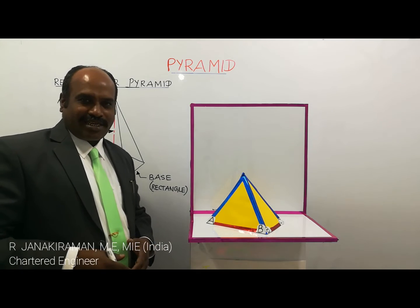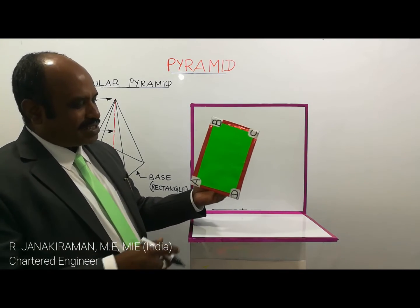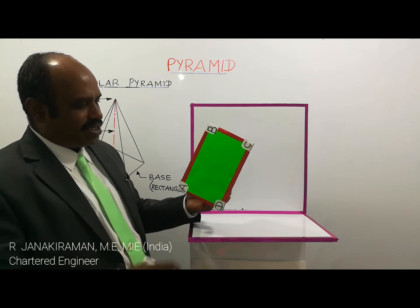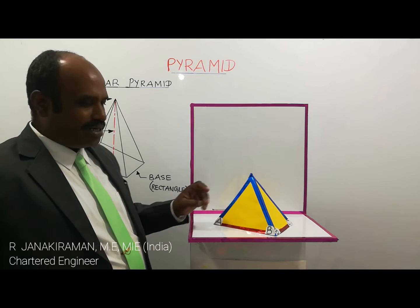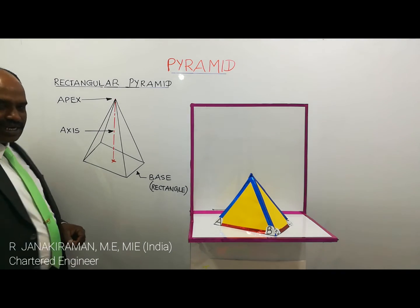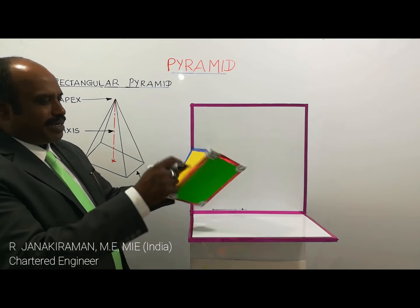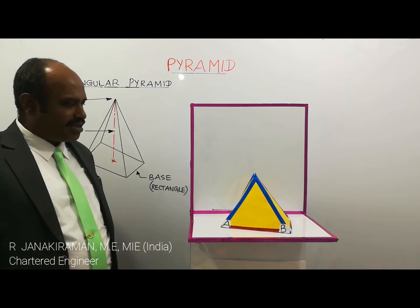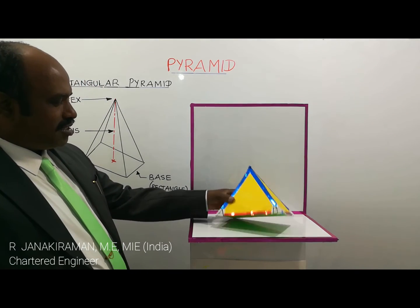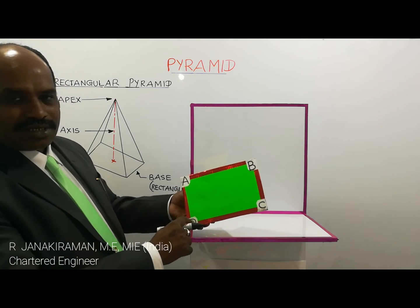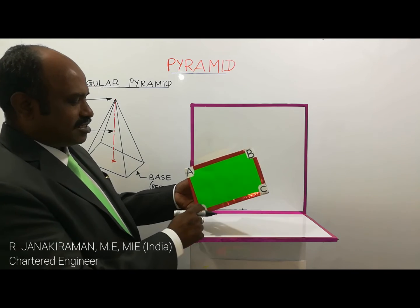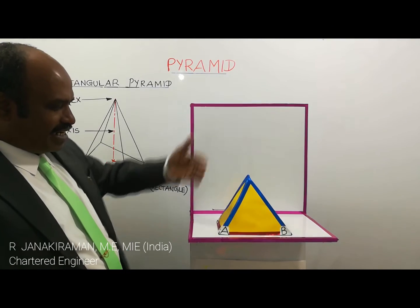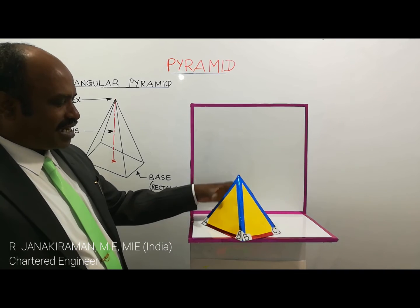The next classification among pyramids is a rectangular pyramid. The green-colored base is of rectangular shape, so it is classified as a rectangular pyramid. The axis is an imaginary line joining the center of the rectangle and the apex. The top corner is called the apex of the pyramid. The rectangle has length and breadth. It has four base corners, and the blue-colored slant edges — four slant edges — are inclined, so called slant edges.